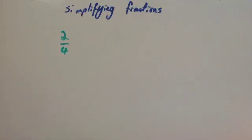In this video we're going to look at simplifying fractions. Let's consider a fraction two quarters. Two quarters is the same as a half. If you consider something like a pizza, if you had two quarters of it it would be the same as having a half of it.